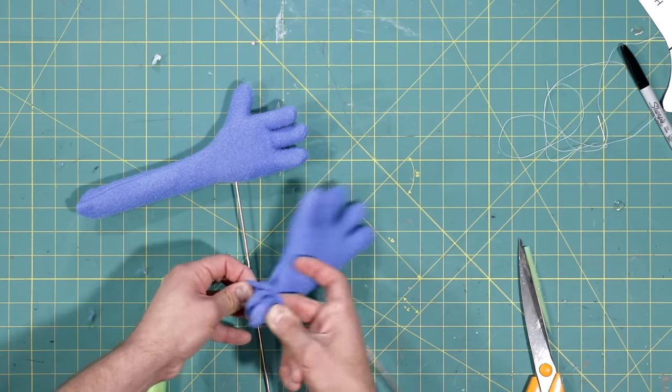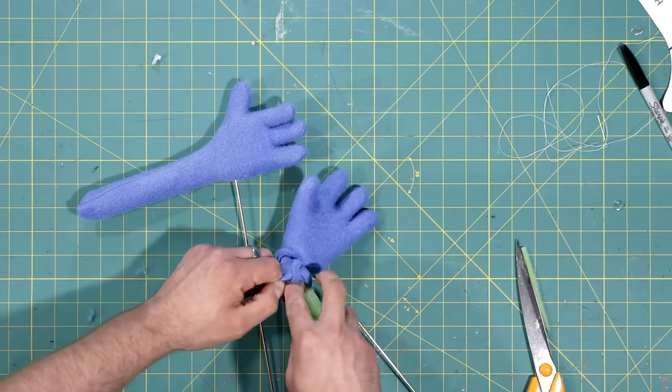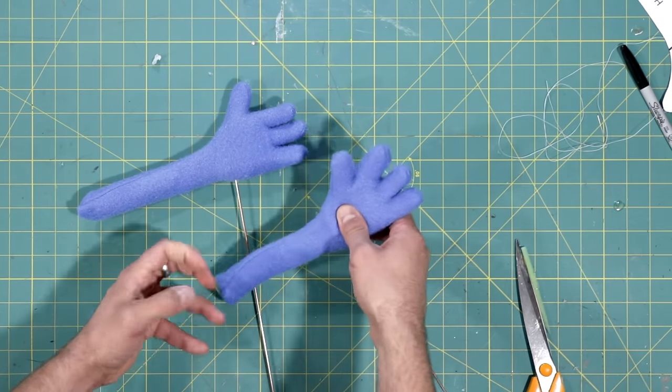Roll the arm inside out, so you can fit the foam inside. And then stitch it up.